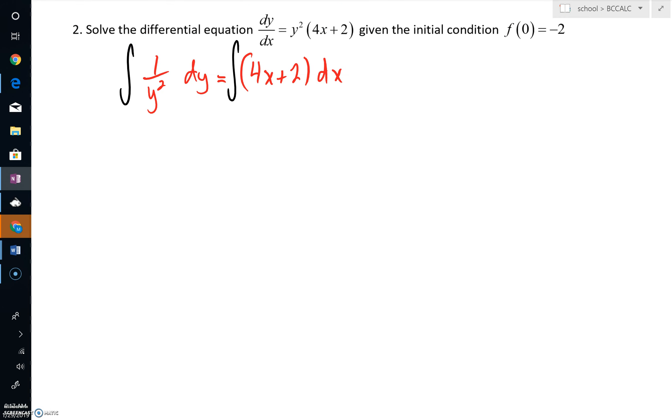From here, I'm just going to take an antiderivative. The antiderivative of, really, this is y to the negative 2. Well, we bump this up to y to the negative 1, and we divide by negative 1.